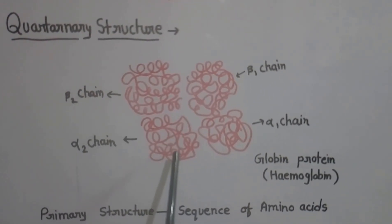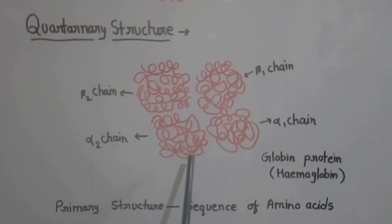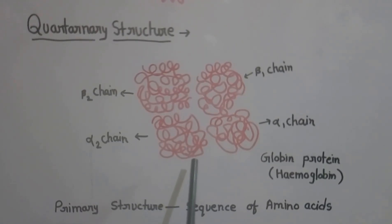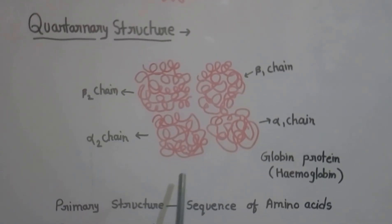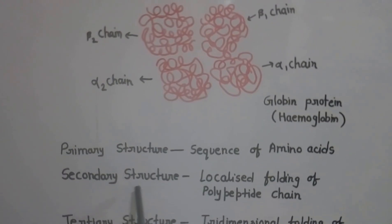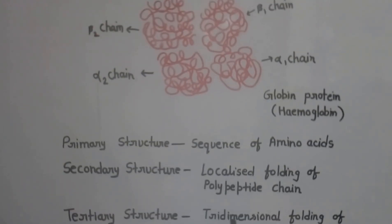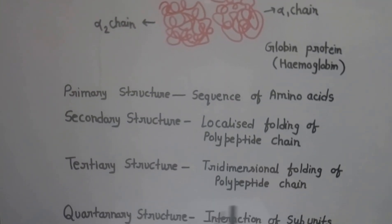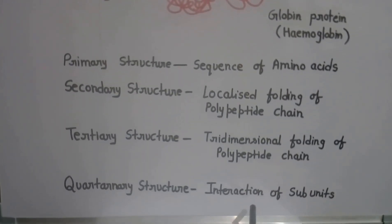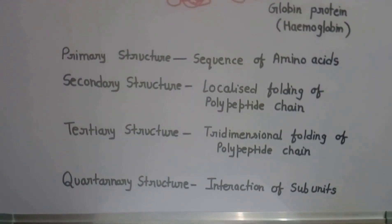In the case of proteins in which more than one polypeptide chain is present, there is a quaternary structure. But in the case of proteins where only one polypeptide chain is present, only the tertiary structure exists. In conclusion: the primary structure is the sequence of amino acids; the secondary structure is the localized folding of polypeptide chains; the tertiary structure is the three-dimensional folding of polypeptide chains; and the quaternary structure is the interaction of these subunits or polypeptide chains. This is all about the structure of protein. Thank you for watching.